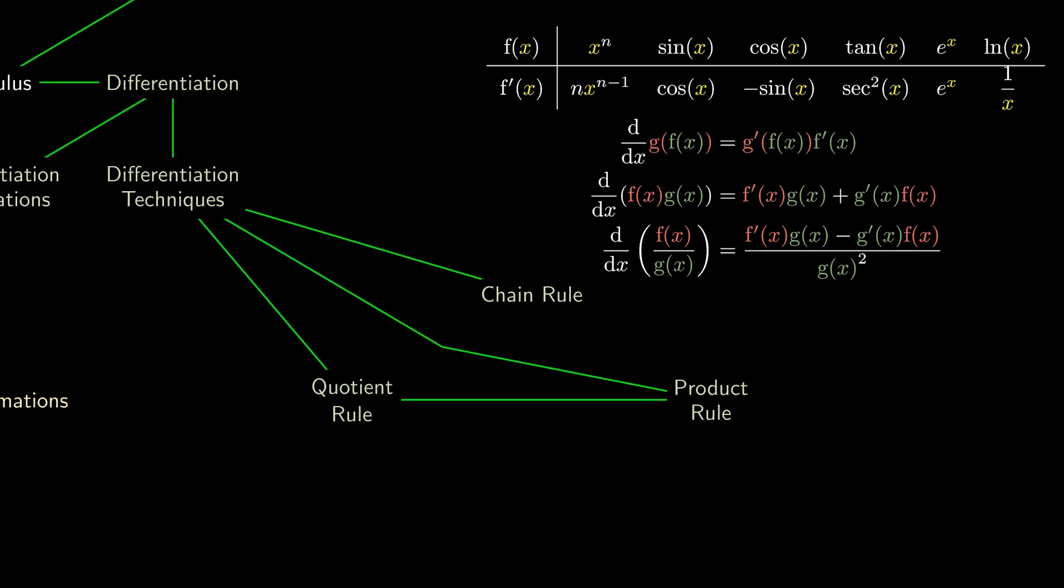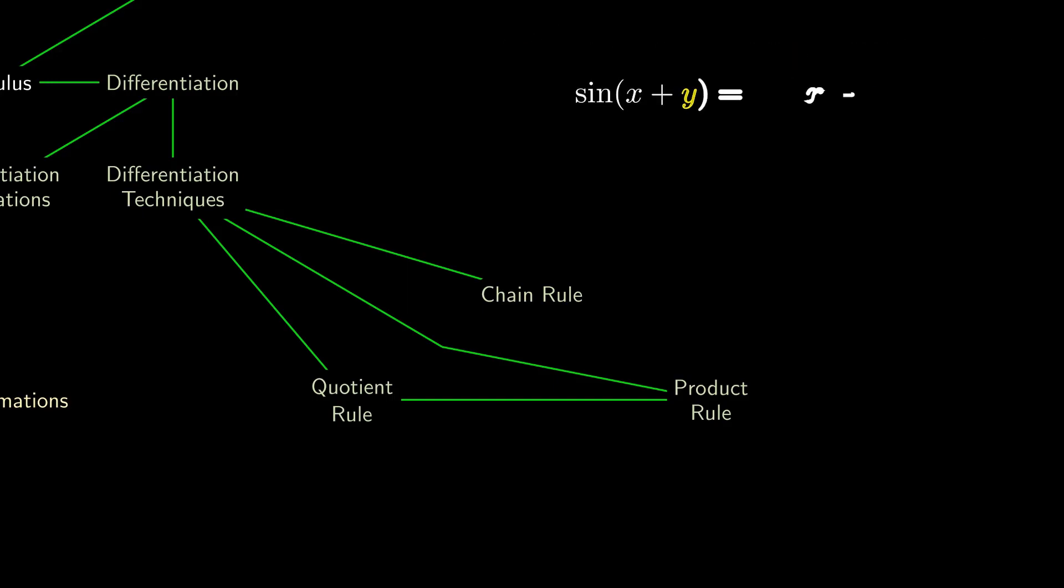The chain rule is really useful in helping us compute derivatives, where we can't really isolate the y from the x. For example, we want to find the derivative of y with respect to x, but y is related to x via the equation sin(x + y) = x + y².